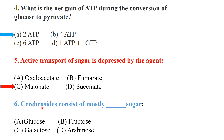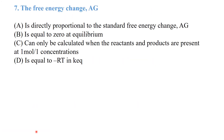Cerebrosides consist mostly of what type of sugars? Cerebrosides mainly consist of galactose sugar. The free energy change delta G is equal to zero at equilibrium.